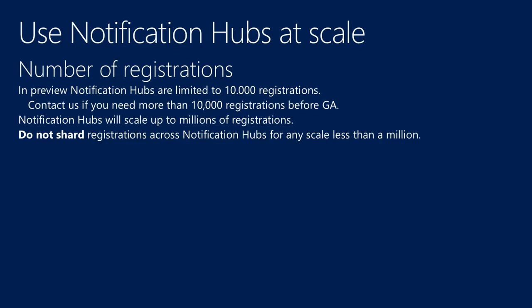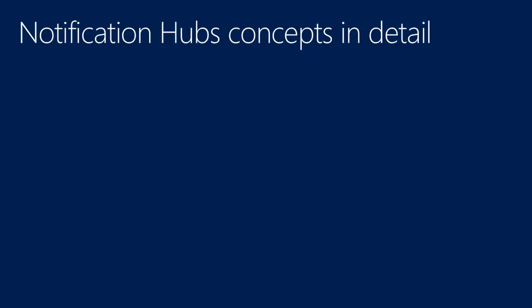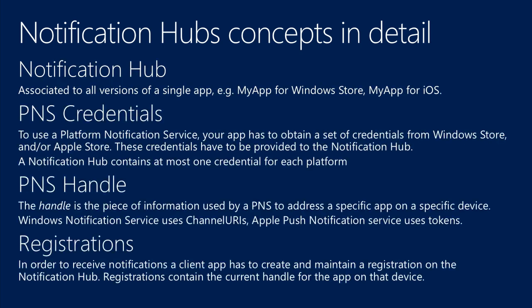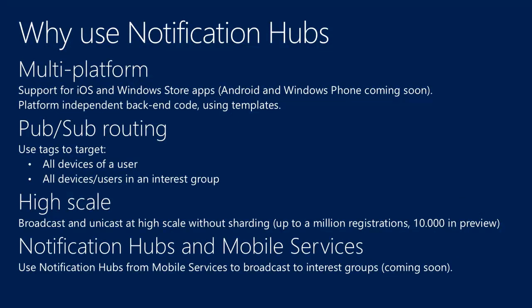Another key problem we solve is scale. Today in preview, we give you up to 10,000 registrations on any notification hub. You don't need to shard them even up to a million — it's just that in preview we've limited that. If you need more, just give us a call. We'll scale out throughput and latency for you where you have hundreds or tens of thousands of notifications. Overall, I wanted to ensure you saw how easy it is to use Notification Hubs and get the rich value.